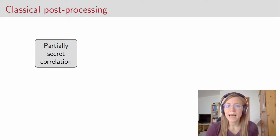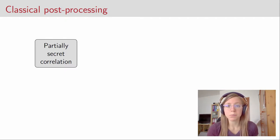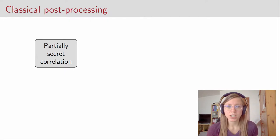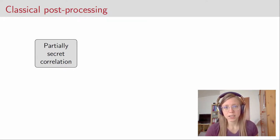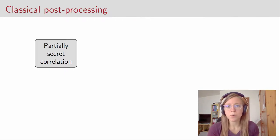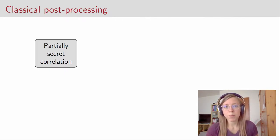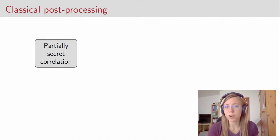When Alice and Bob have concluded the quantum transmission part, each of them holds a bit string. The two bit strings are partially correlated and partially secret. There are probably some errors in the bit strings — they won't be totally equal — and probably there will be some information that has been leaked to an adversary Eve.